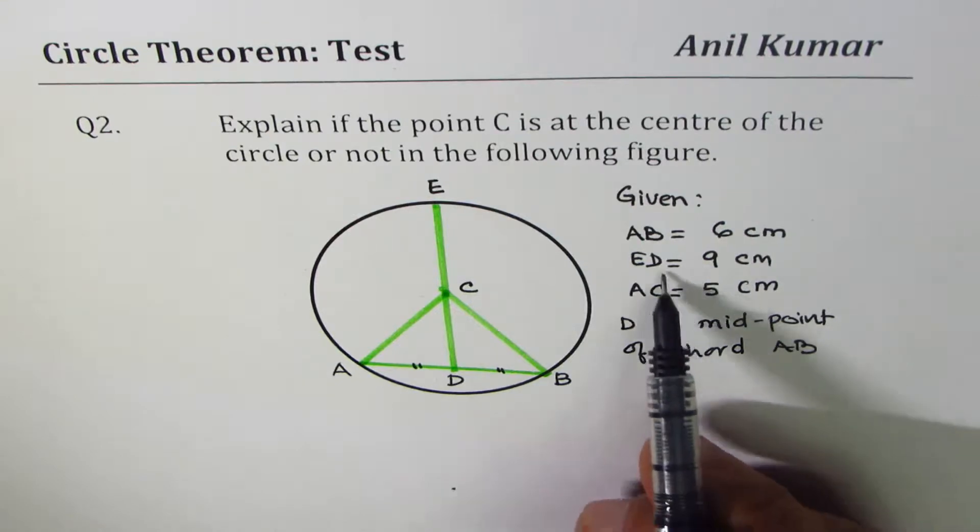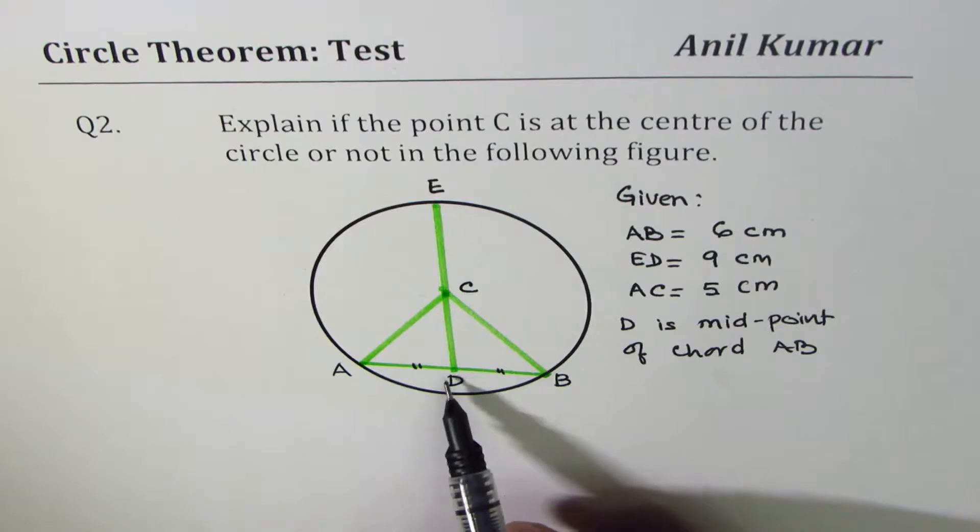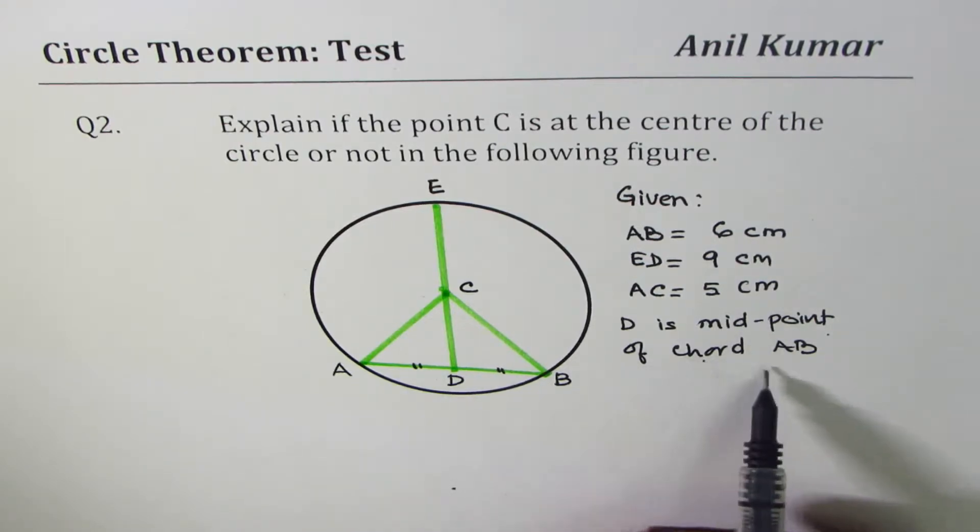A to C, 5 centimeters, and D is the midpoint of the chord AB.